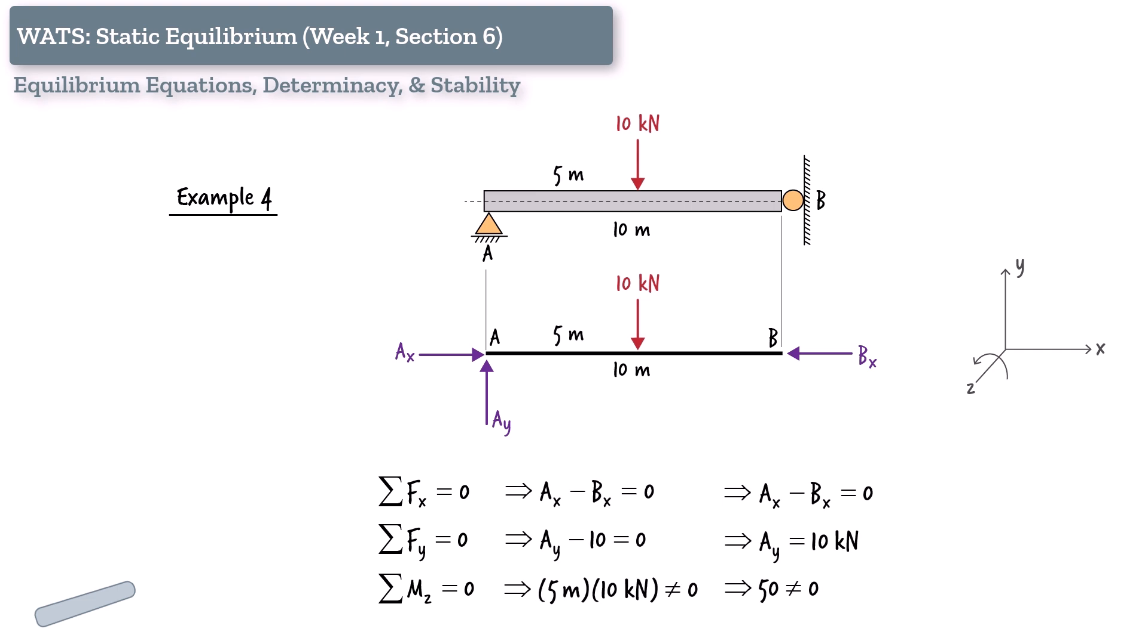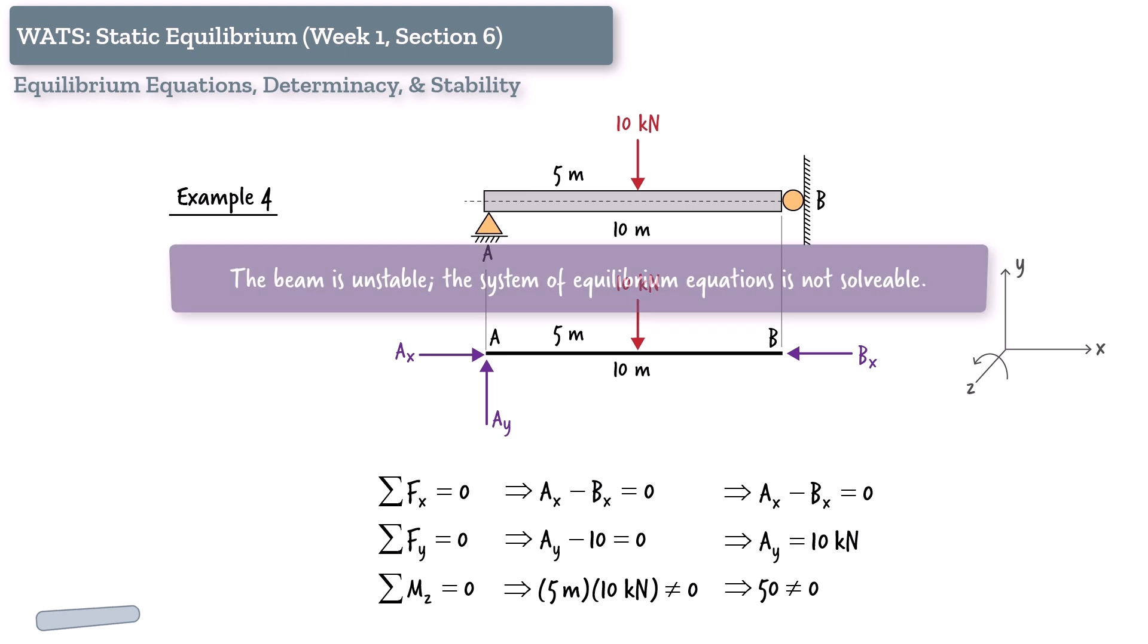And there's the problem. The moment equation says that 50 equals 0, which is clearly not true. This contradiction tells us something important. Even though we have the right number of equations and unknowns, the system is unstable. The equations do not produce a consistent, solvable set.